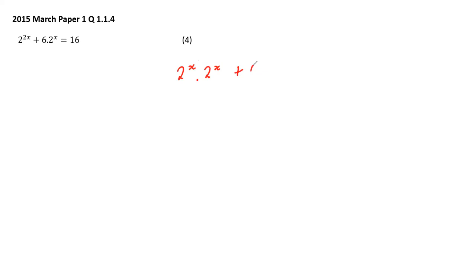Here's another question: 2 to the power 2x plus 6 times 2 to the power x equals 16. You might try to factor out 2 to the power x, but then you get stuck because you'd need everything equal to zero. You can only split like that when equal to zero - same as quadratic equations. So a different approach is needed.